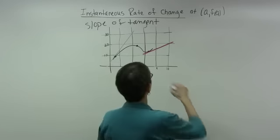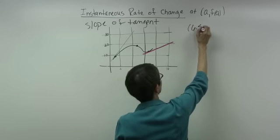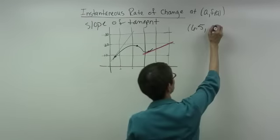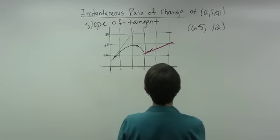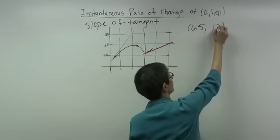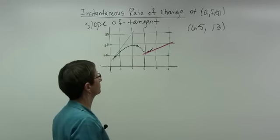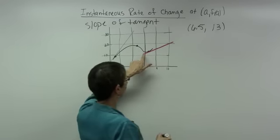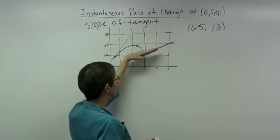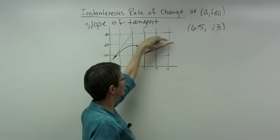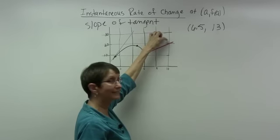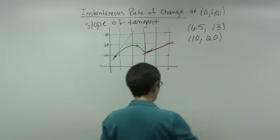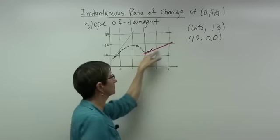Looking at the graph, the point of tangency for the red line appears to be about x equal to 6.5 and y equal to 13. The other point on the line, found by extending the line to a grid crossing, is the point (10, 20). Those are the two points that give the slope for the red tangent line.